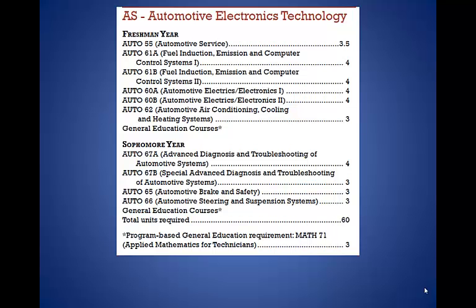This list is from the Online General Catalog. It shows the major courses required for the AS in Automotive Electronics Technology. You can see that there is a total of 11 major courses required, including the Program-based GE requirement, Math 71, for this AS degree. You need to complete both the ASGE courses and major courses, plus complete a minimum of 60 degree-applicable units for your AS degree in Automotive Electronics Technology.